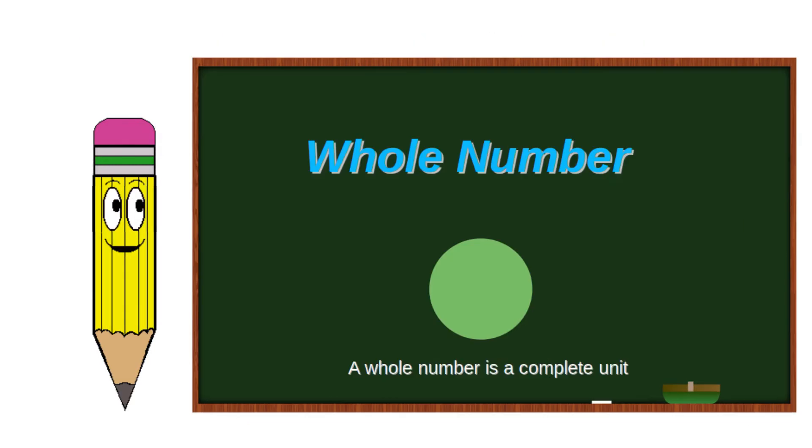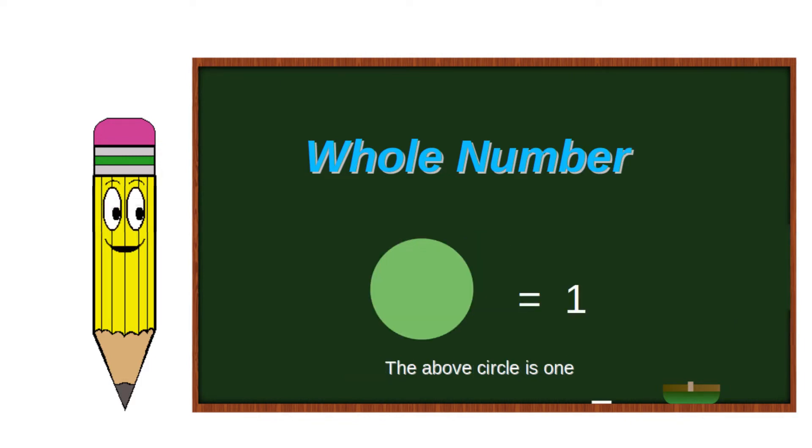Basic Concepts: Whole Number. A whole number is a complete unit. The above circle is one.